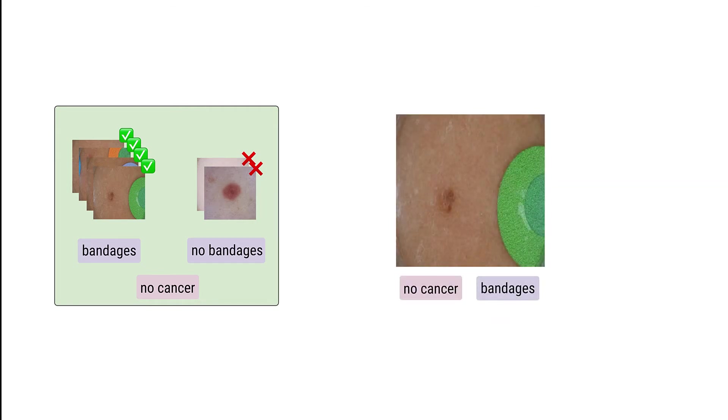In the skin cancer example, our model should ideally learn to ignore the bandage, relying only on the skin lesion to make its prediction. More generally, we want that features unique to a particular subgroup should not be used by our model at all.